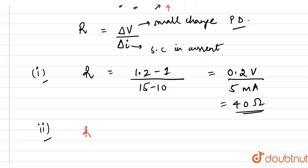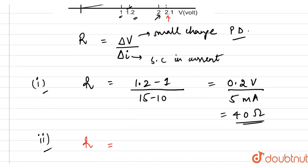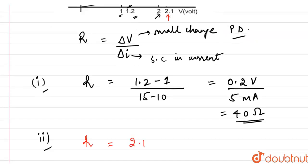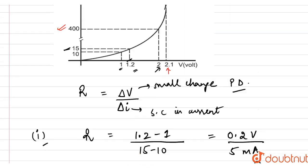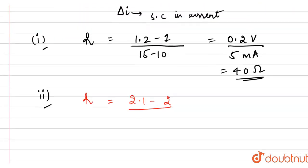So, here the dynamic resistance comes out to be small change in potential difference, 2.1 minus 2 volts, divided by the change in current, 800 minus 400. This comes out to be 0.25 ohm.